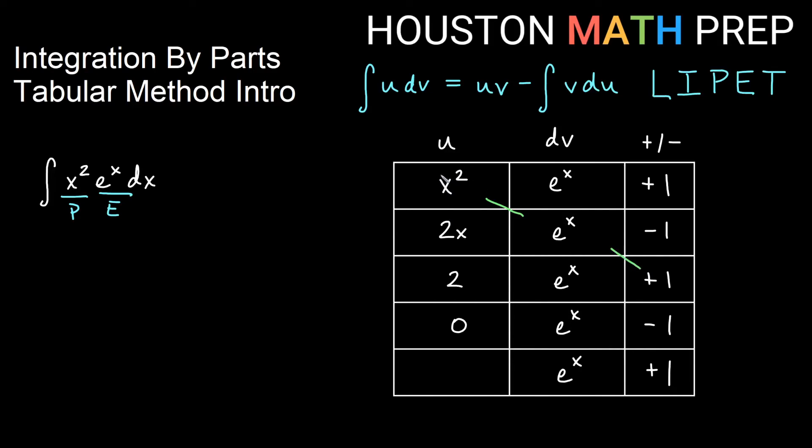So if you look at starting in the top left, and we go down diagonally, notice this is u, this was dv, so if you integrate, this is v, so there's the uv part of the formula, right? If you can imagine what's happening here.